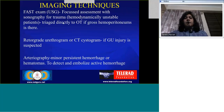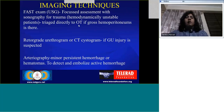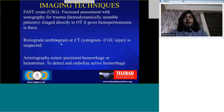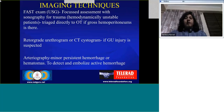A FAST exam is done in some centers — it is basically a focused assessment with sonography for trauma, wherein if the patient is hemodynamically unstable and there is not even enough time to do a CT, a quick ultrasound is done to check for gross hemoperitoneum. If you are suspecting GU injury, we may do a retrograde urethrogram or a CT cystogram. In cases where the patient already has a Foley catheter and you pick up some fractures, you may immediately want to do a CT cystogram to identify bladder injury.